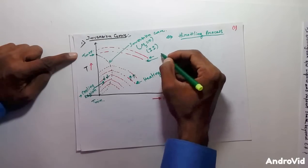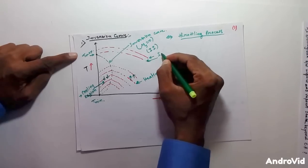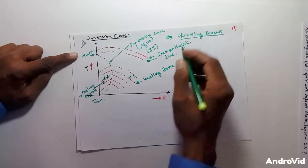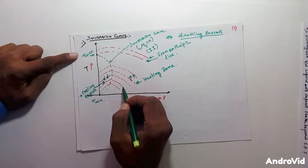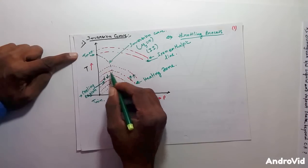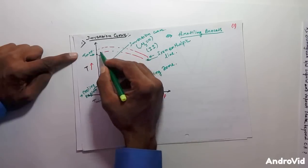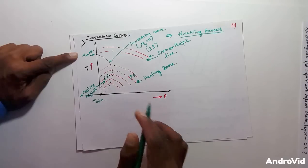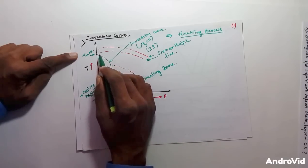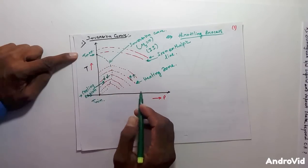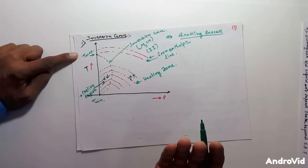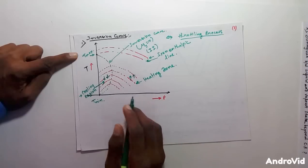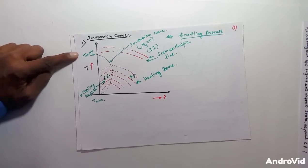These red color lines represent isenthalpic lines. I have drawn them in a dotted manner because these curves are obtained from the throttling process, and the throttling process is a highly irreversible process. An irreversible process cannot be represented as a continuous line in any property diagram of thermodynamics. That is why it is represented as a dotted line. This is the answer to the first question.